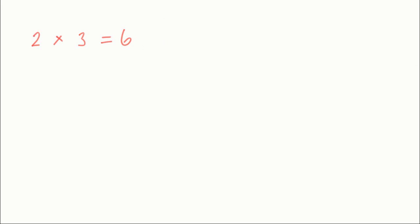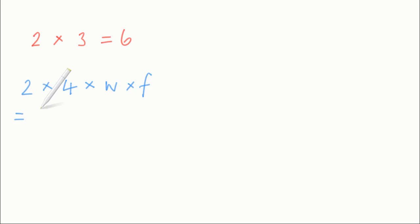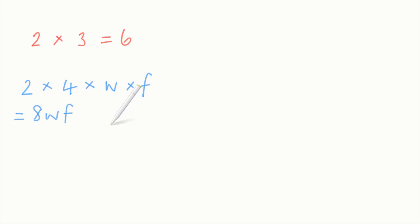What's the product of 2, 4, w and f? It's just the answer you get when you multiply those four things together. So 2 times 4 times w times f: well, 2 times 4 is 8, and then 8 times w times f you would write as 8wf. So 8wf is the product of 2, 4, w and f.